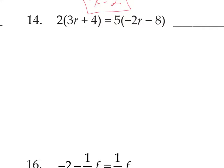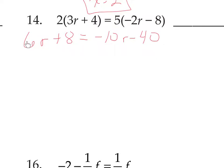On number 14, we need to simplify first — get rid of parentheses, then combine like terms on either side before undoing operations. Distributing the 2 gives 6r plus 8 on the left. Distributing the 5: 5 times negative 2 is negative 10r, 5 times negative 8 is negative 40. Each side has one r term and one constant term, so we're simplified. Now we get the variables to the same side — let's add 10r.